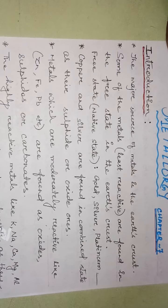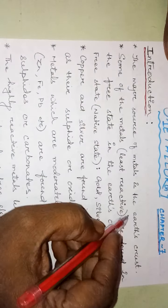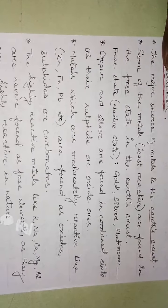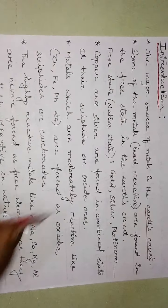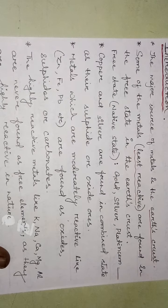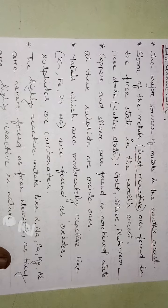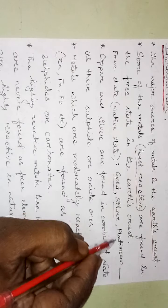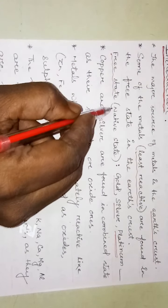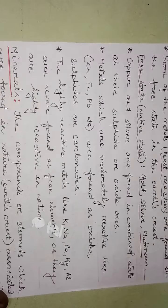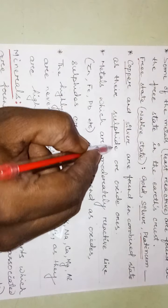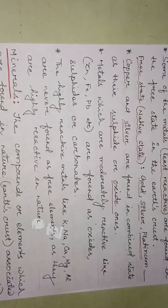As an introduction, the major source of metals is the earth's crust. Some of the least reactive metals are found in a free state in the earth's crust. Referring to the metal reactivity series, metals at the bottom — like gold, silver, and platinum — are available in the native or free state. Certain metals like copper and silver are also found in combined state as their sulfides or oxides in ores.